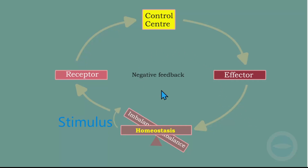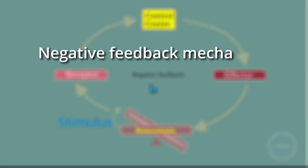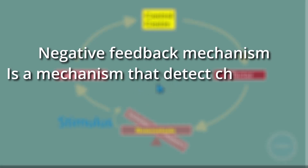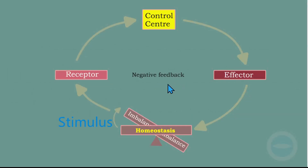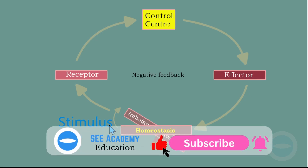Here I have this diagram representing the negative feedback mechanism. The definition of the negative feedback mechanism is: a mechanism that detects changes or imbalance in the internal environment and restores balance. For the negative feedback mechanism to take action, there must be a stimulus — the stimulus is what causes a change or imbalance.